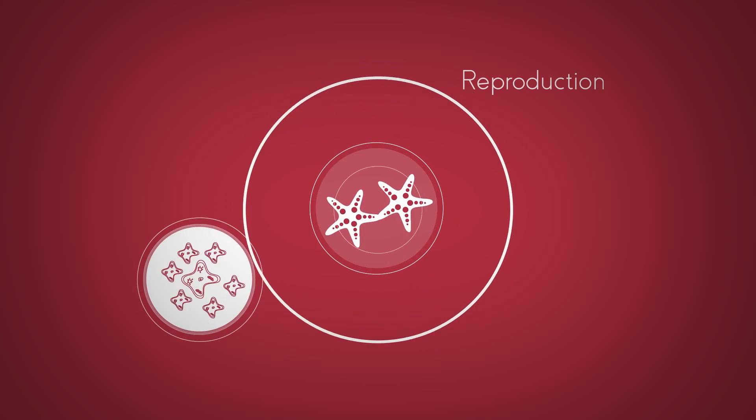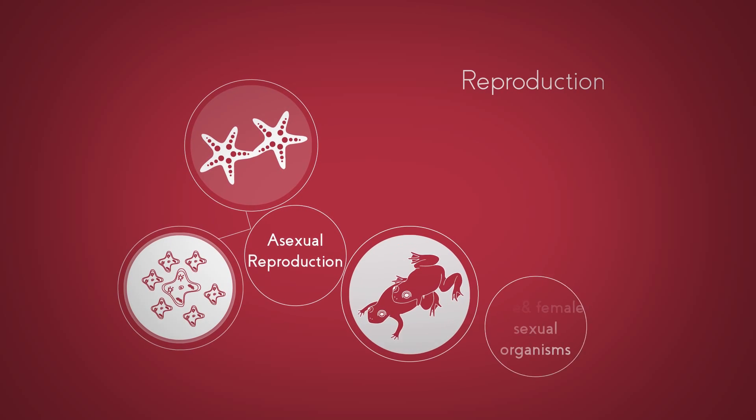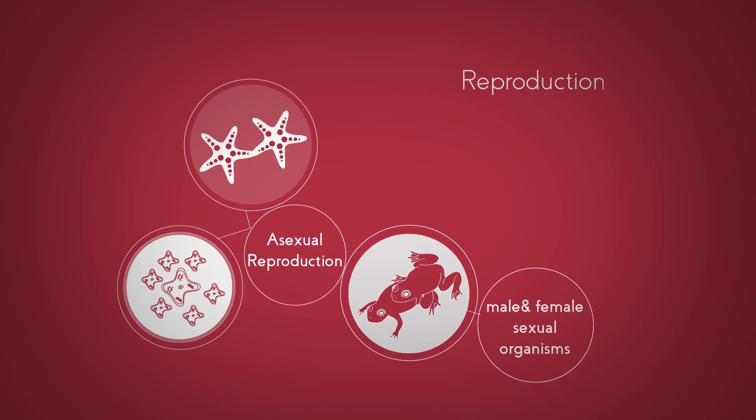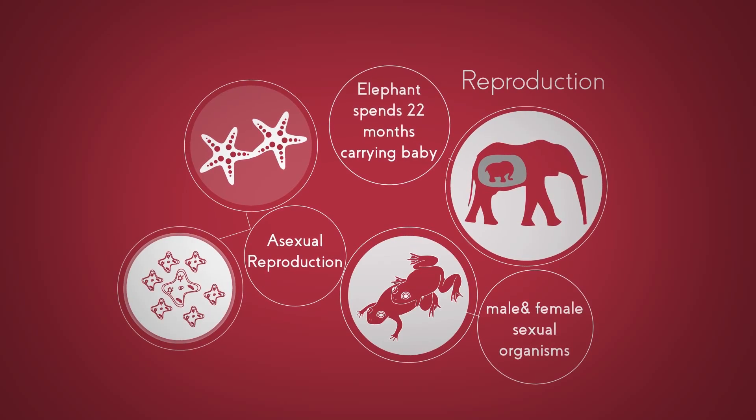The fifth is reproduction. Some organisms can reproduce on their own, such as bacteria. This is called asexual reproduction. Others carry out sexual reproduction, using a male and a female of the species. Bacteria can reproduce every 20 minutes, but an African elephant takes 22 months to carry its baby.